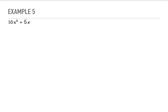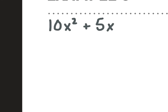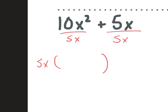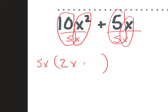Alright, next one — example 5. What do we have in common that we can take out here? A 5. Any x's in common? 1x. So we're taking out a 5x. What are we left with? Let's divide the numbers first — what's 10 divided by 5? 2. And then if we have two x's and we're taking one away, we have 1 left. And here, what's 5x over 5x? 1, because 5 divided by 5 is 1 and x over x is 1. So we have 5x times 2x plus 1, and this is our answer.